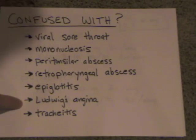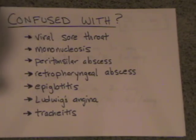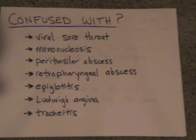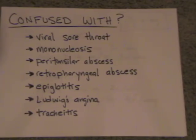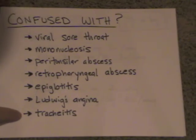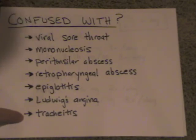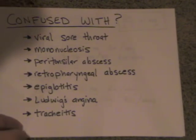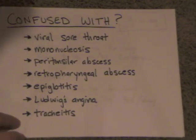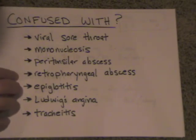Ludwig's angina is an infection involving the spaces underneath the tongue and the floor of the mouth. What you can see in these patients is that underneath the lower jaw, the tissue gets very swollen, very hard, very tender, and sometimes red. Again, that can be very dangerous, requiring the operating room and IV antibiotics. Finally, somewhat rare but important: tracheitis, which is a bacterial infection in the trachea, can make people very, very sick and occlude airways. It requires IV antibiotics and special care. These are the dangerous types of sore throats you can see.